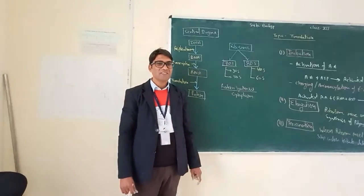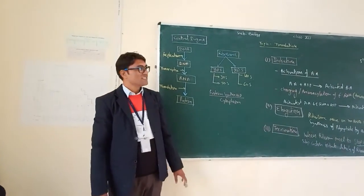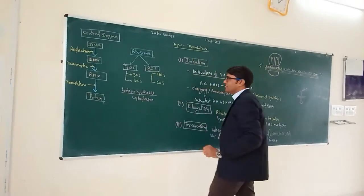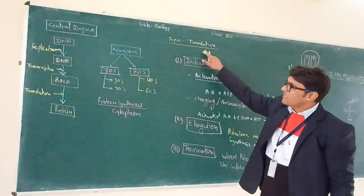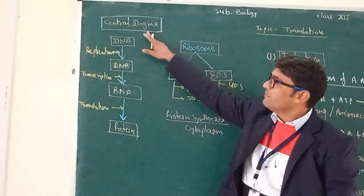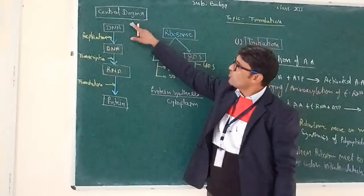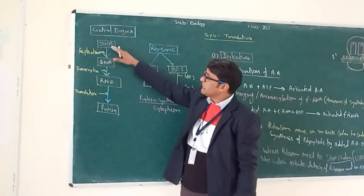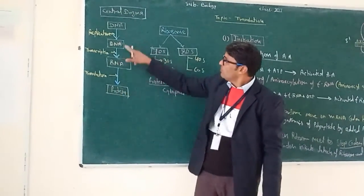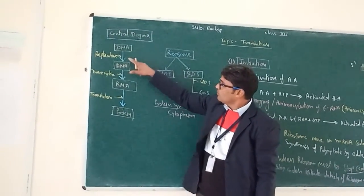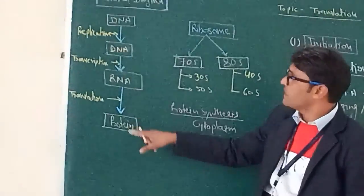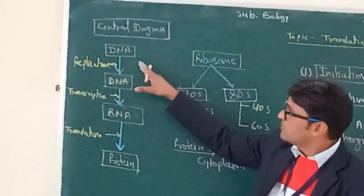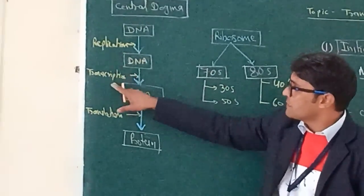Hello students, today we will discuss our topic: translation, which is also a step of central dogma. We know that in central dogma, coding information which lives on DNA is converted into protein. So from DNA to the production of protein is known as central dogma. This process takes place in three steps: replication, transcription, and translation.